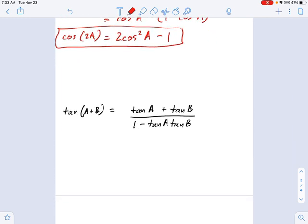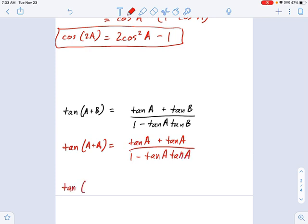Now this last one, tangent A plus B is very easy. You just change all the B's to A's. So we get tangent of A plus A equals tangent A plus tangent A over 1 minus tan A times tan A. And if we simplify this a little bit, we get the following. Tangent of 2A equals 2 times tangent of A divided by 1 minus tangent squared of A.